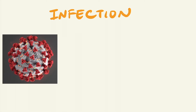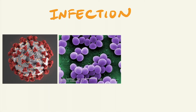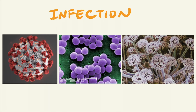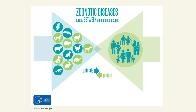For infections, this can be any organism that is capable of causing disease. Some examples include viruses, bacteria, and fungi. Animals can also transmit infections to humans, known as zoonosis, and this can be either direct or indirect.